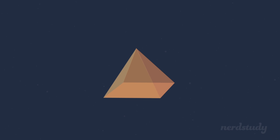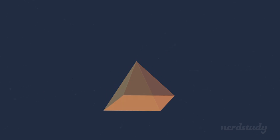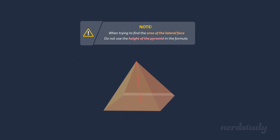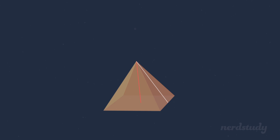It's important to remember that when you are looking for the surface area of a pyramid and trying to find the area of the lateral faces to add to the area of the base, you cannot use the height of the pyramid to find the area of the lateral faces. We need to use the height of the lateral face itself, which will either be given to us or we might have to find it ourselves — in this case, using the Pythagorean theorem.